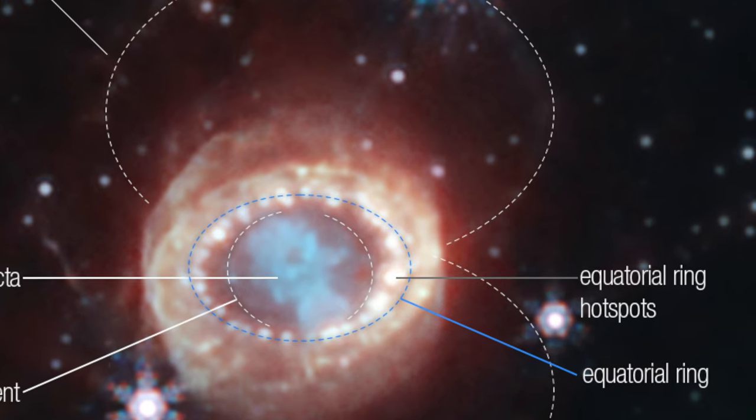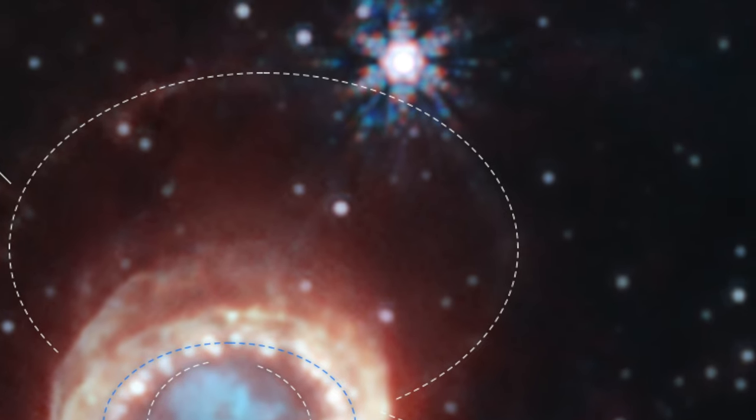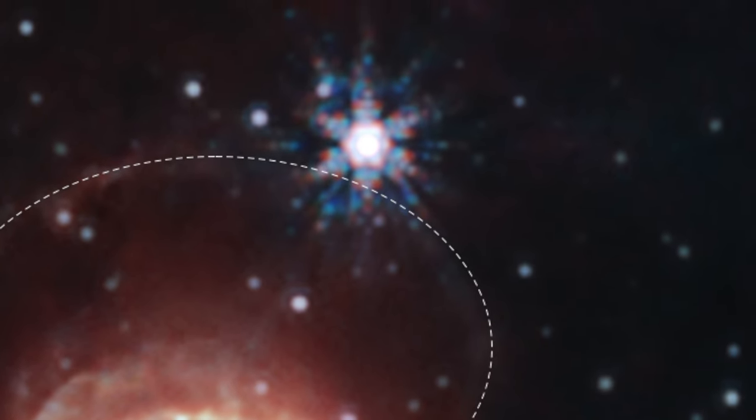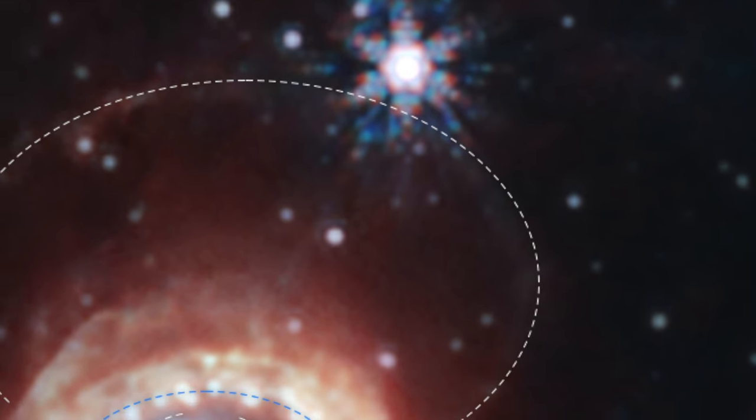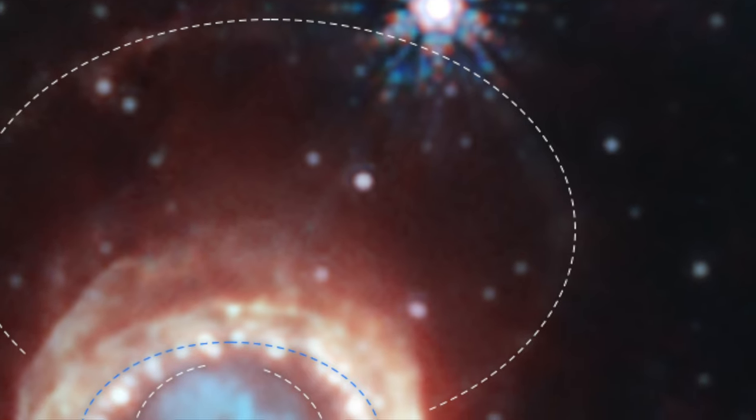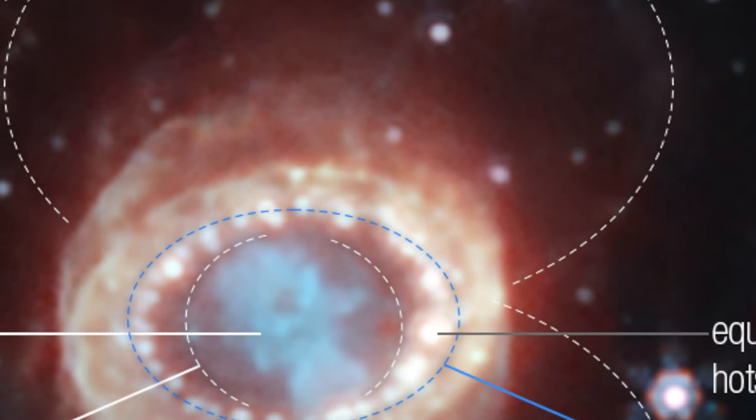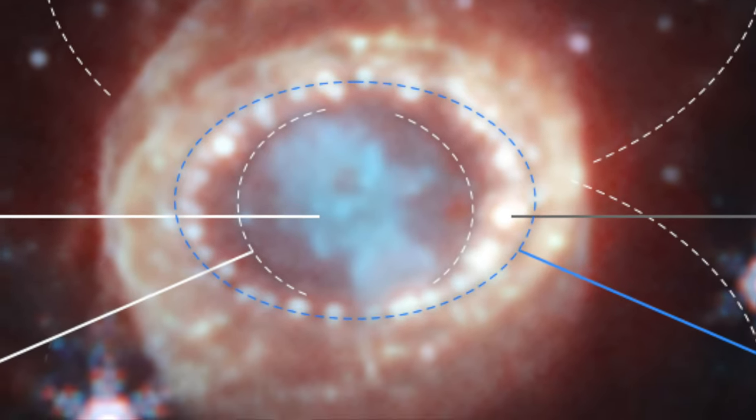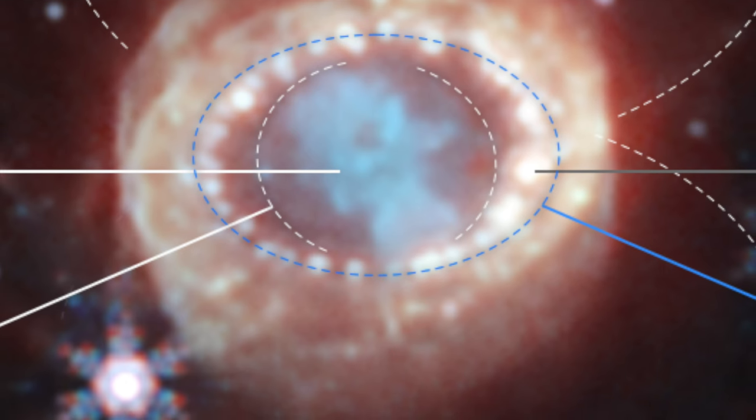SN 1987A isn't just any supernova, it's a remnant that carries tales of cosmic history etched in its very structure. Nestled in the constellation Dorado, this celestial wonder is not exactly next door. Try imagining a distance of 163,000 light years, so far away that the light we're seeing from it today actually started its journey around the same time that humans first began to leave Africa. To put it in simpler terms, light from SN 1987A has traveled 50 kiloparsecs to reach us. A kiloparsec is just a fancy term that astronomers use to describe 3,262 light years.